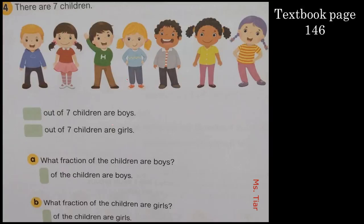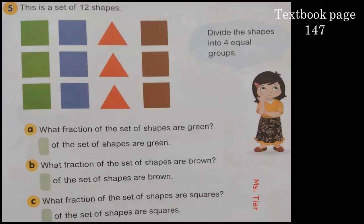Now check the question on your textbook page 146. There are seven children. How many boys? We have three — so three out of seven children are boys. How many girls? We have four — so four out of seven children are girls. What fraction are boys? Three-sevenths. What fraction are girls? Four-sevenths.